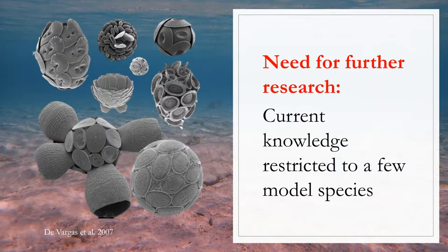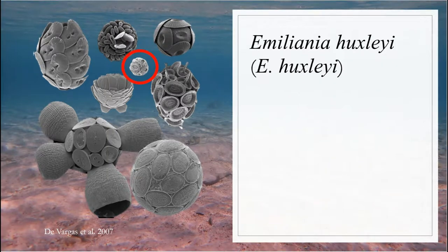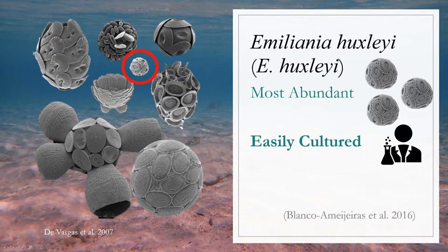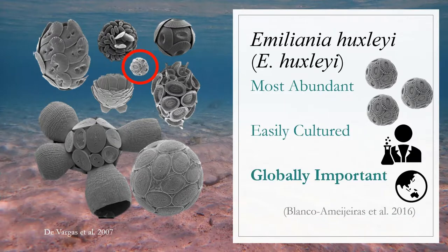However, despite their importance, the majority of information on coccolithophores, such as on the molecular and physiological processes of calcification, are restricted to a few model species. The most intensively studied member of the coccolithophores is Emiliania huxleyi, as it is the most abundant coccolithophore species in the ocean, easily cultured under a broad range of environmental conditions, and is globally important.